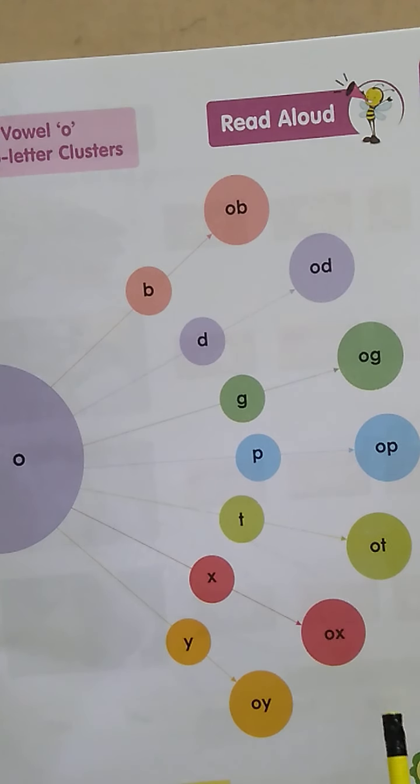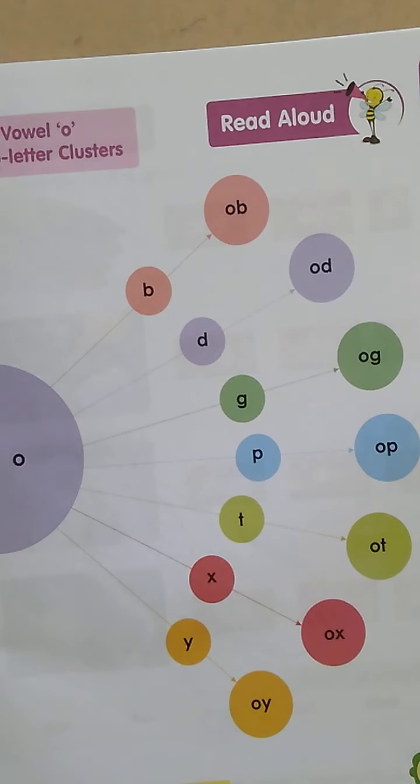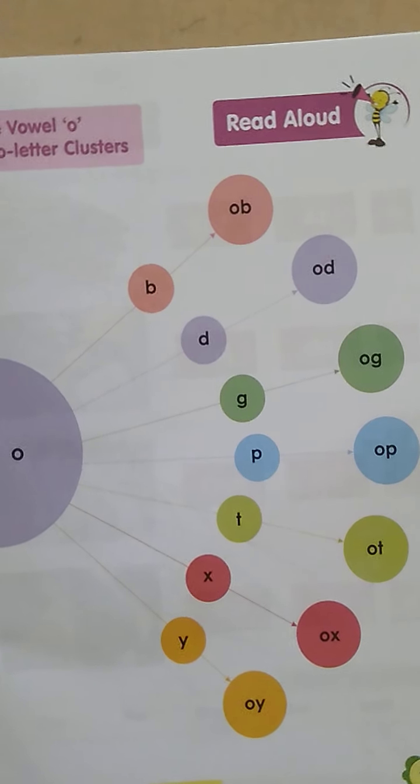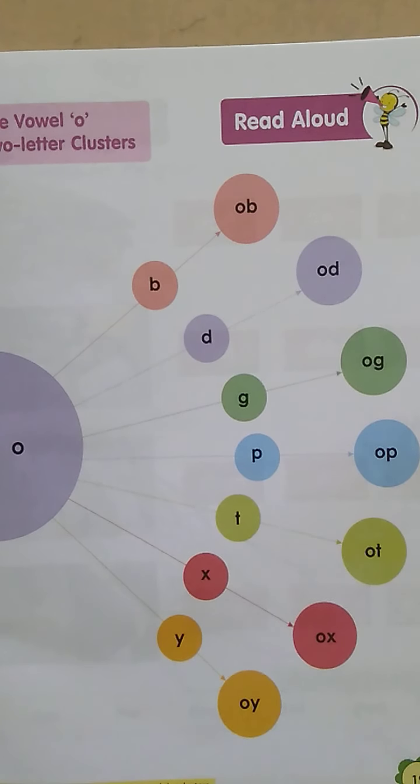O and Y make the sound OY, like BOY. Okay. We will do a few more exercises in the next video related to the O sound. Till then, keep reading every day.